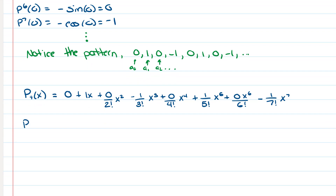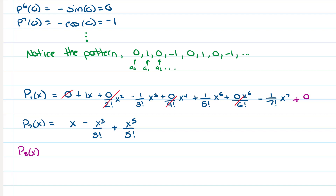Getting rid of the zero terms, the seventh order polynomial is x − x³/3! + x⁵/5! − x⁷/7!. Notice that the zero terms just go away. Also notice that if you go to the eighth order polynomial, you would be adding a 0/(8!) · x⁸ term, so the eighth order polynomial equals the seventh order polynomial.